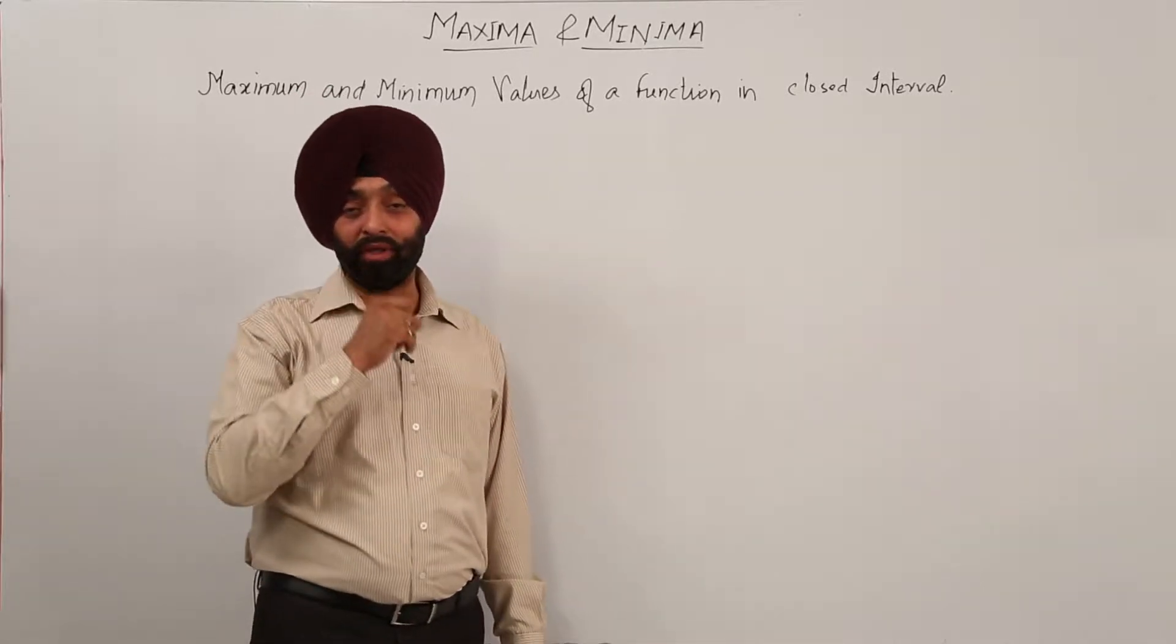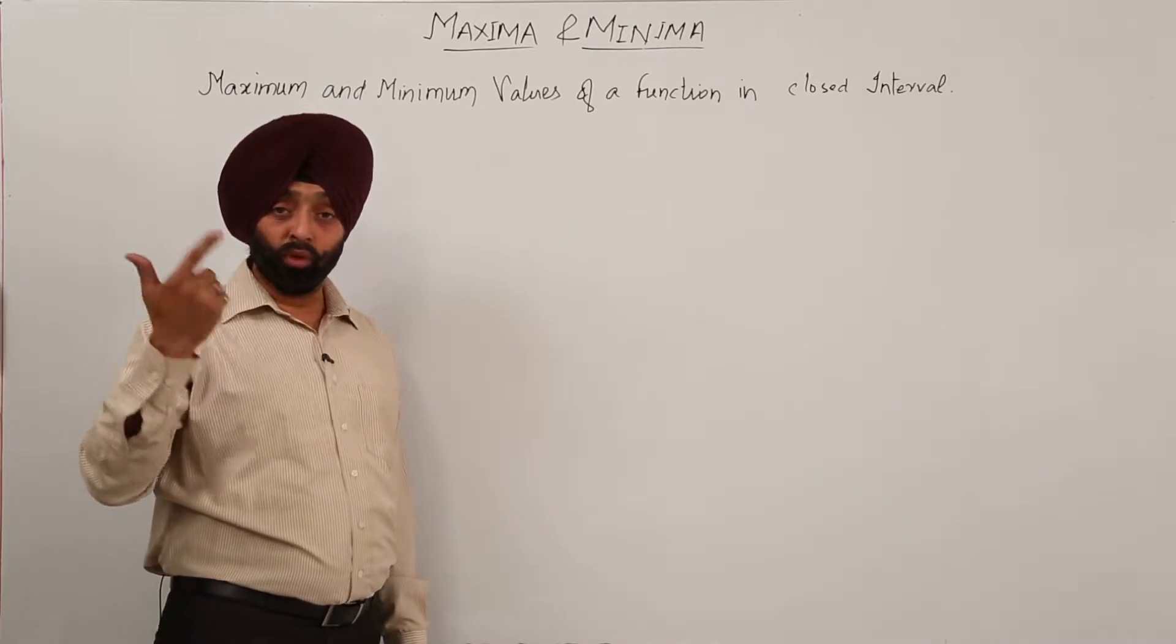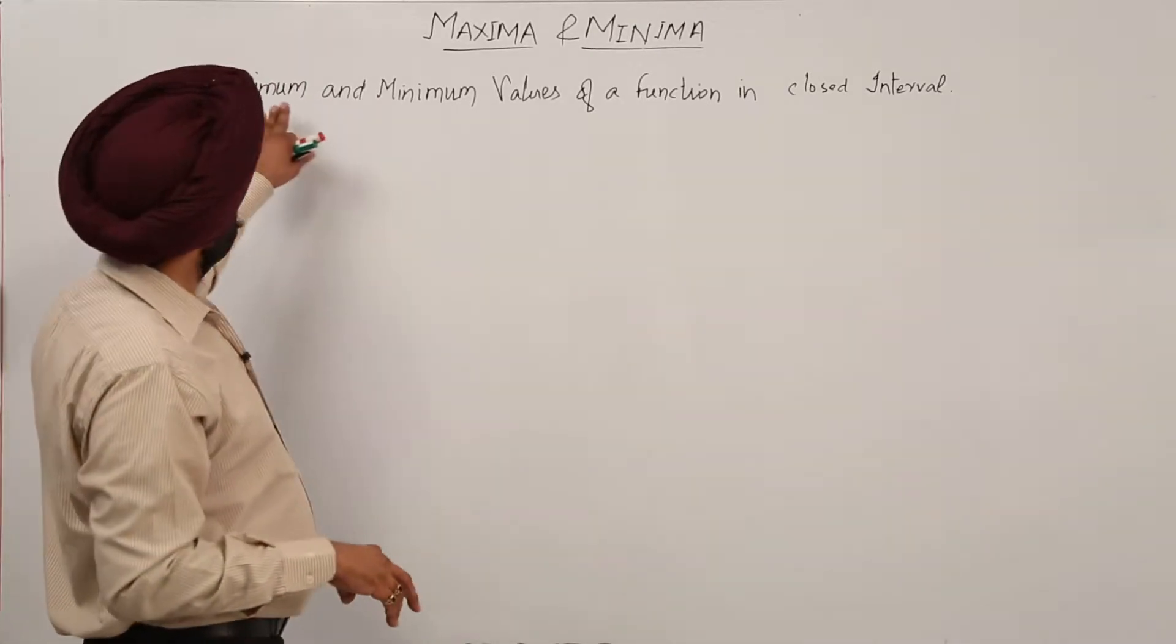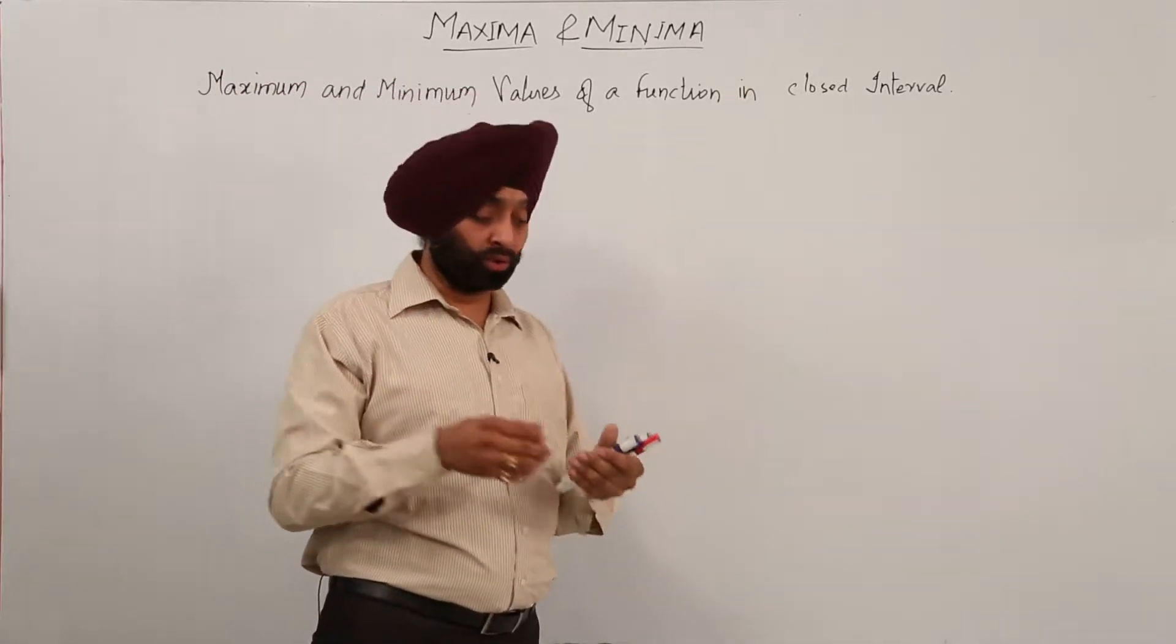We have gone through the graphical representations for the absolute maxima, absolute minima and we are going to do more also. Now what is the effect if maximum and minimum values of a function are in closed intervals?